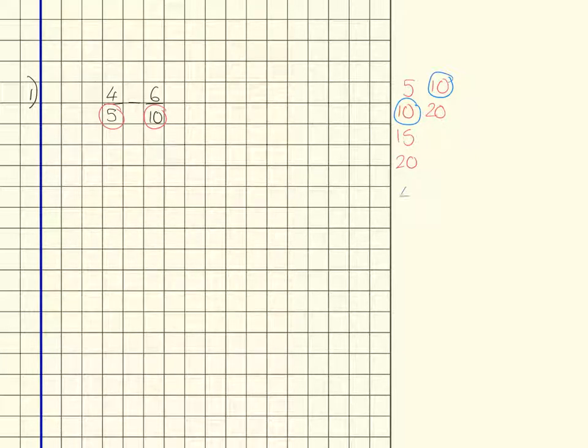So we're going to take 4 fifths, and to get to tenths we've got to times it by 2. Times by 2, times by 2 will give us the tenths we're looking for, and it's 8 tenths, so this equals 8 tenths.